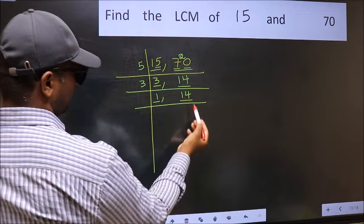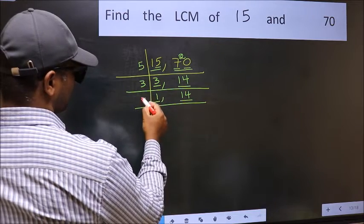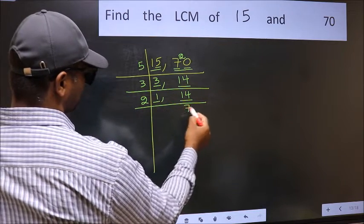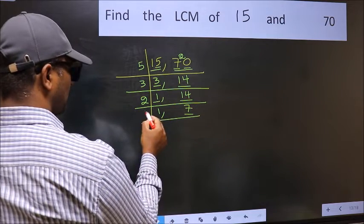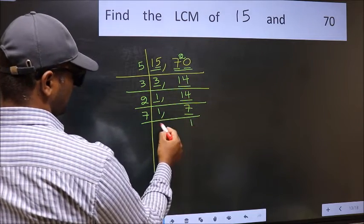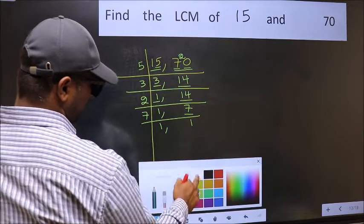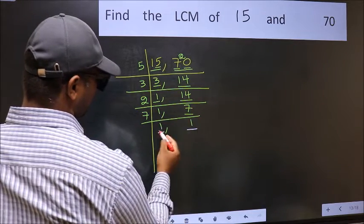So focus on the next number 14. 14 is 2 7s, 14. Now here we have 7. 7 is a prime number, so 7 1s, 7. So we got 1 in both the places.